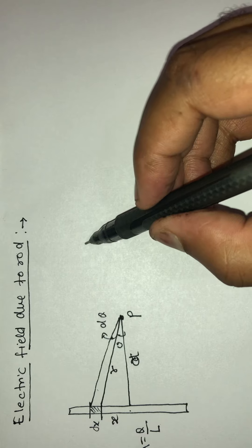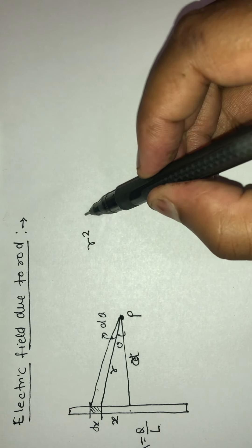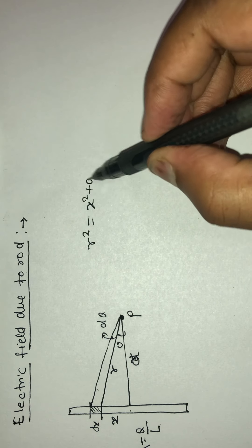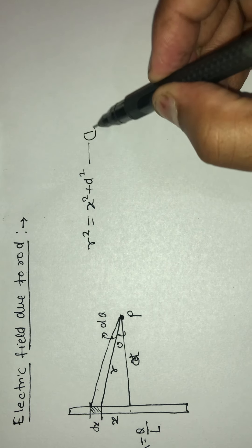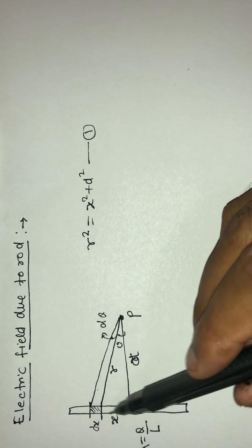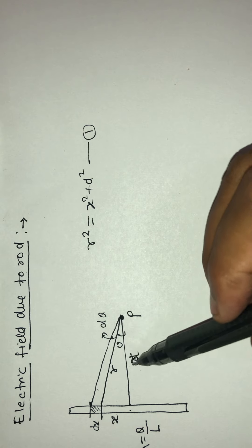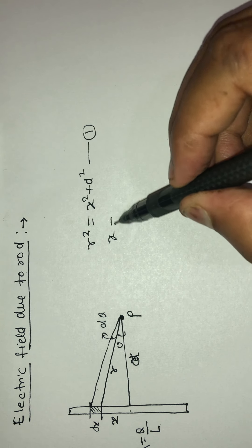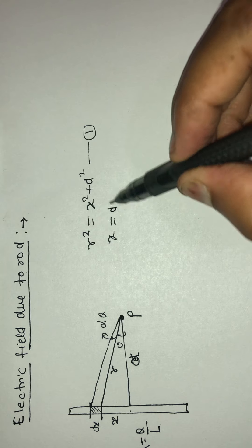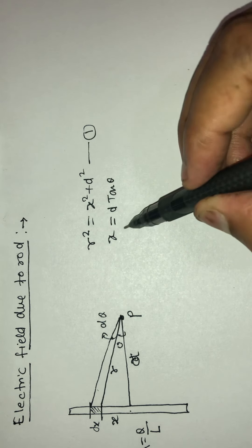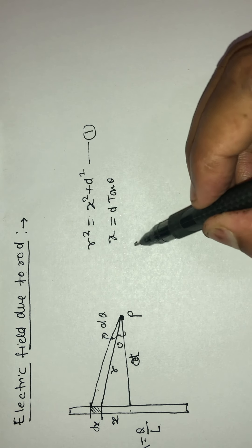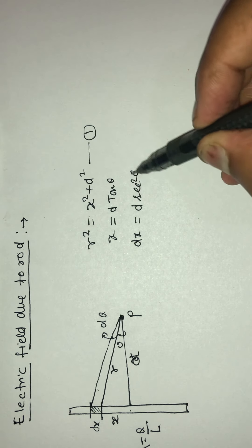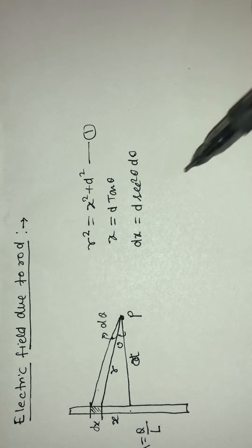R squared is equal to x squared plus d squared. And from this triangle, x divided by d is equal to tan theta. So x is equal to d·tan theta. If I differentiate this, I will get dx is equal to d·sec²(theta)·d(theta).